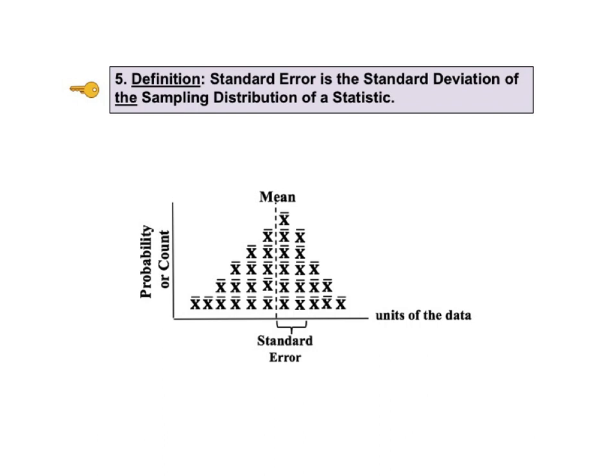However this illustration only shows a sampling distribution with 33 means. The definition of a standard error talks about the sampling distribution. The sampling distribution is a theoretical concept. It is the distribution of all possible samples. In practice, since we can't usually measure all possible samples, we use formulas like those shown under KTU number 2.